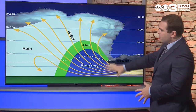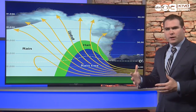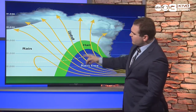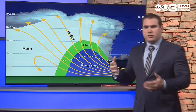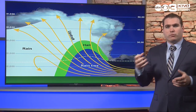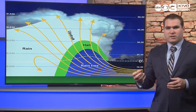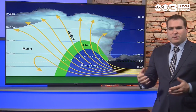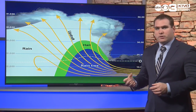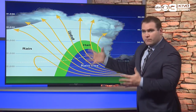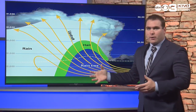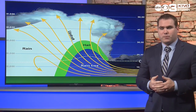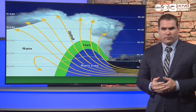If the storm updraft is actually strong enough, that hailstone could loop around inside the thunderstorm and grow in that process — and it will do that multiple times. When the hailstone finally falls down, it could be as large as either a golf ball or even a softball.